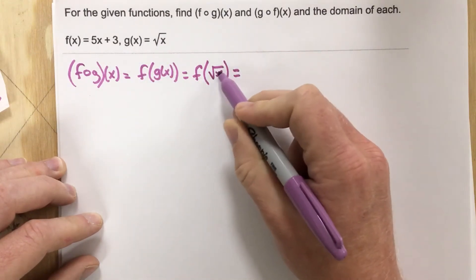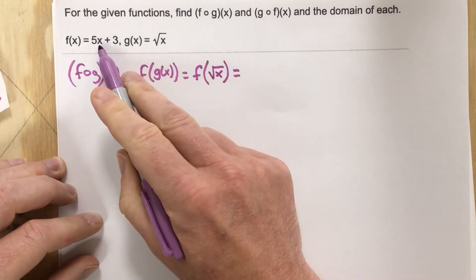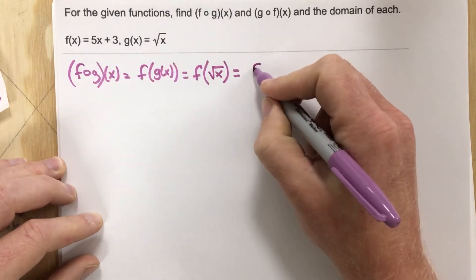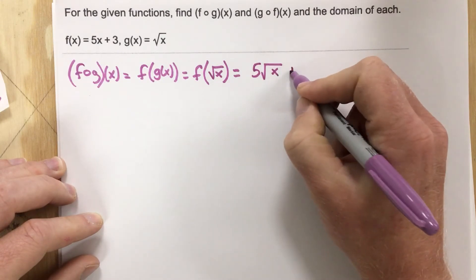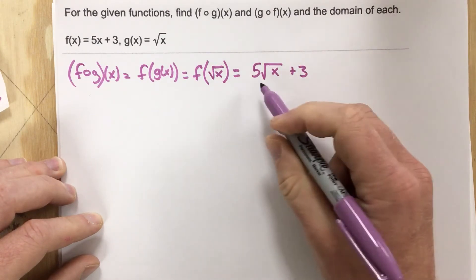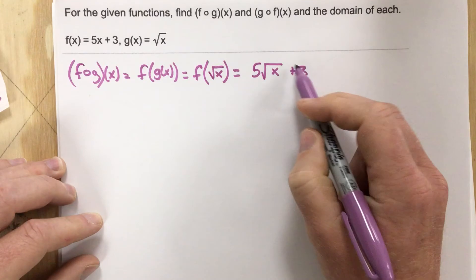Now I take the square root of x and plug it in for the x value of f, which gives 5 times the square root of x plus 3. This is f of g of x.